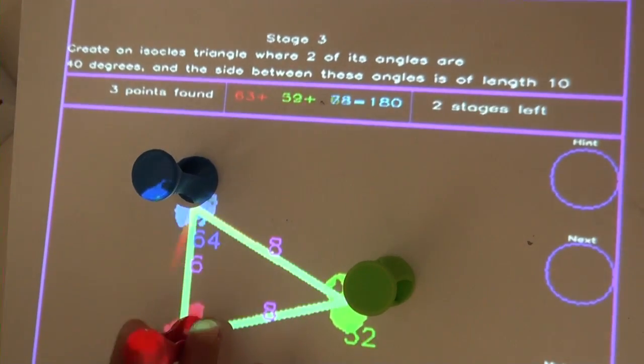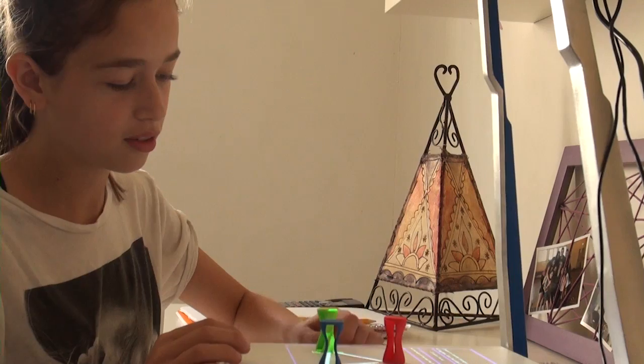Create a triangle that has an 80 degree angle. Will the side in front of it always be the longest?